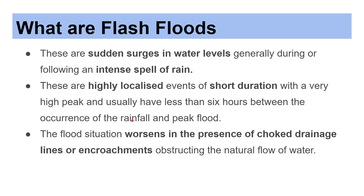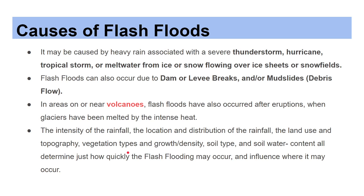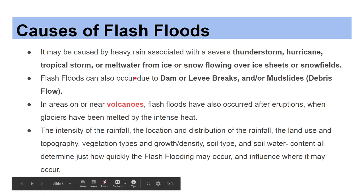What are flash floods? Flash floods are sudden surges in water levels, generally during or after an intense spell of rainfall. These are highly localized events of short duration with a very high peak, and usually have less than six hours between the occurrence of rainfall and the peak flood. The flood situation worsens in the presence of choked drainage lines or encroachments obstructing the natural flow of water.